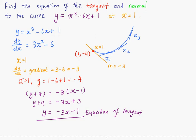Now, how do we find the equation of the normal? The normal refers to the line that is perpendicular to the tangent. This is the normal.